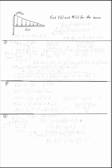Find V and M for the beam. We're going to do this in three different ways: by taking two different sections and by integrating. But in all of those cases, absolutely the first thing you always have to do is draw a free body diagram for your beam.